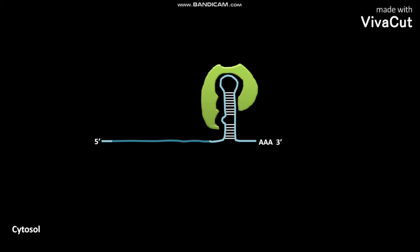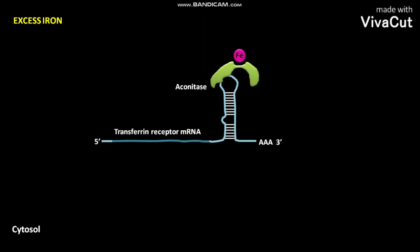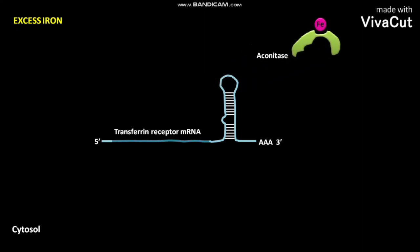Now let us consider what happens to transferrin receptor mRNA bound to a cytosolic aconitase when there are excess irons in the cytosol of a cell. In this condition, the iron binds to the bound aconitase. Due to this binding, the bound aconitase undergoes a conformational change. Due to this conformational change, the iron-bound aconitase dissociates from the transferrin receptor mRNA.